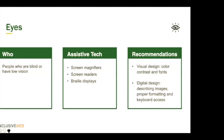When designing for people who are blind or have low vision, here are some recommendations. Make your visual design more clear and easy to read through good color contrast, using accessible fonts, spacing, and things of that nature. In your digital design, make sure that images are described through alt text. Make sure that under the hood, the formatting of your digital product matches what it actually looks like. And for keyboard access, make sure that everything you can click on can be accessed by the keyboard using the tab key and then spacebar or enter to activate.